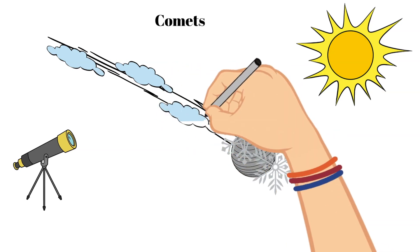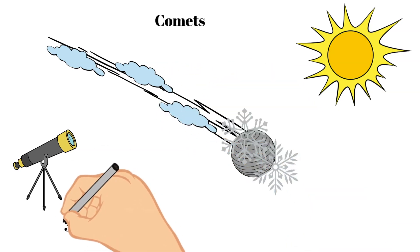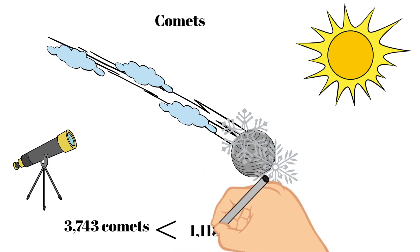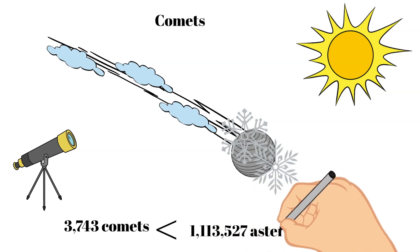One interesting fact is the current number of known comets in our solar system is 3,743, which is actually quite small in comparison to the current number of asteroids known, which is 1,113,527.